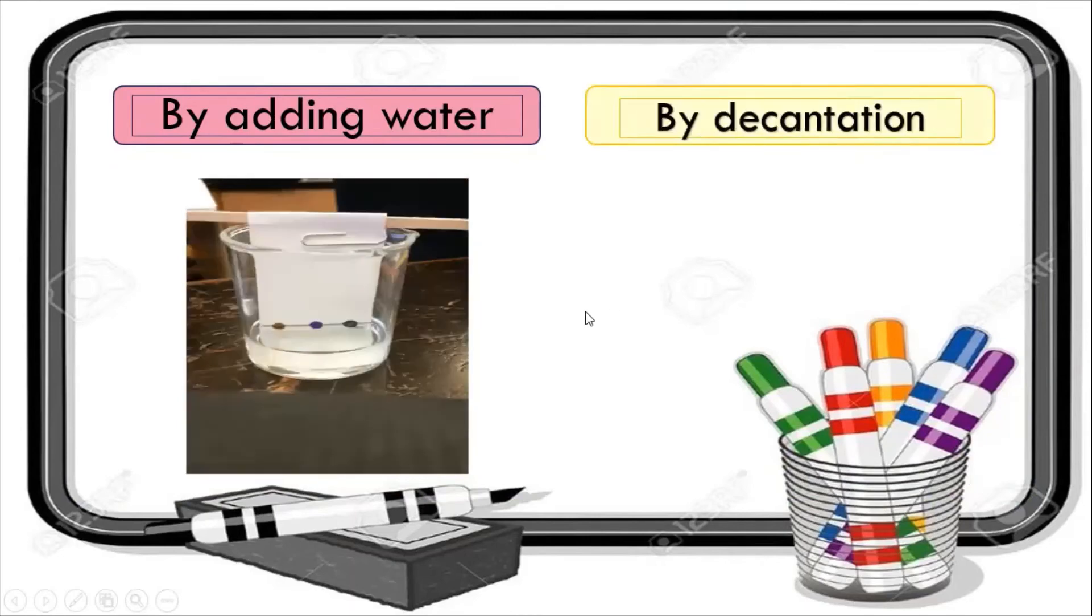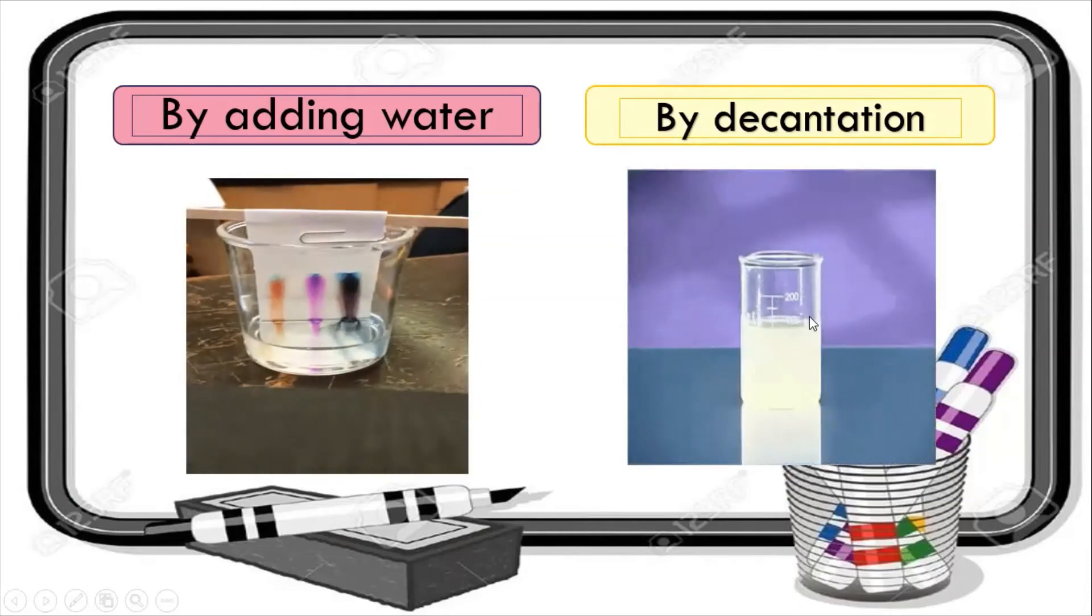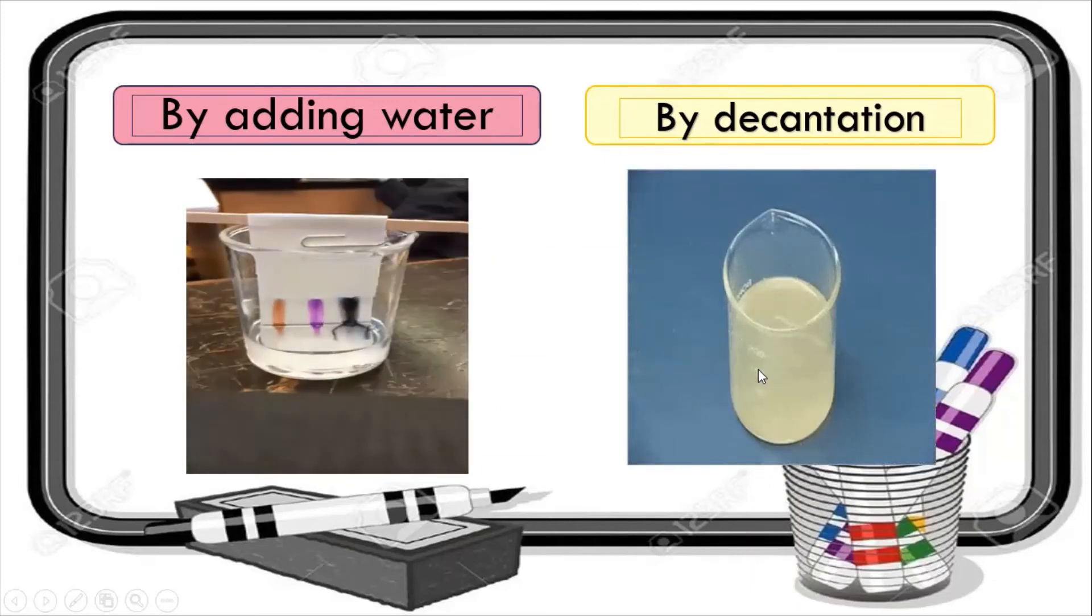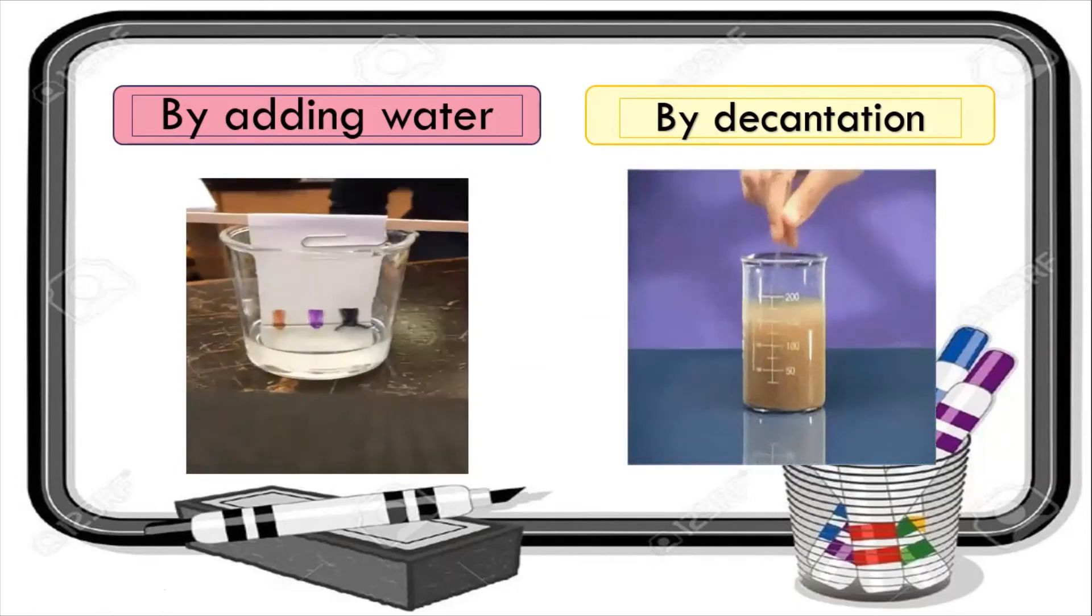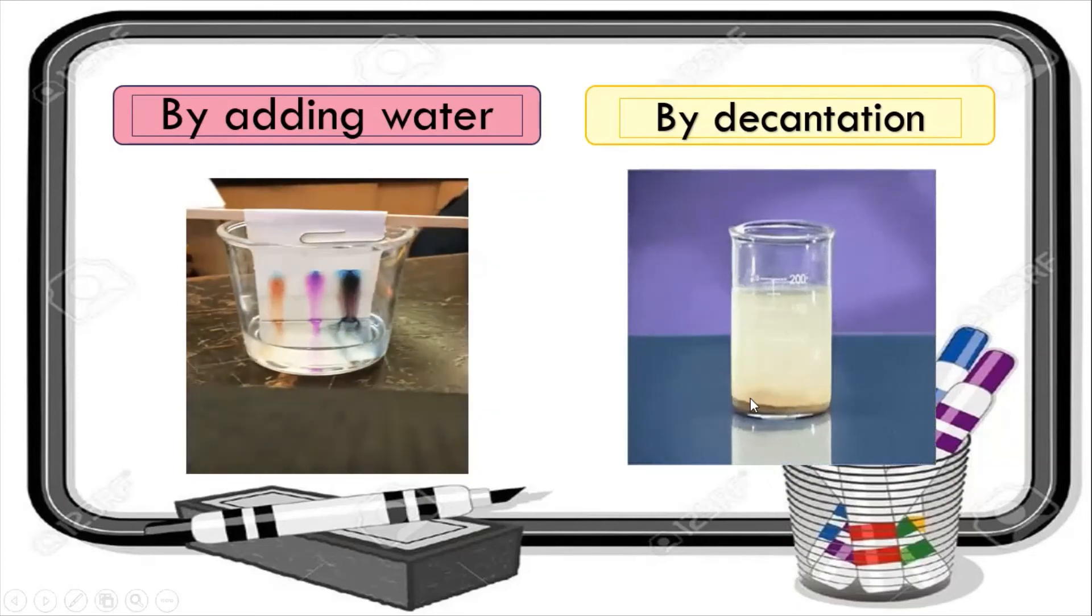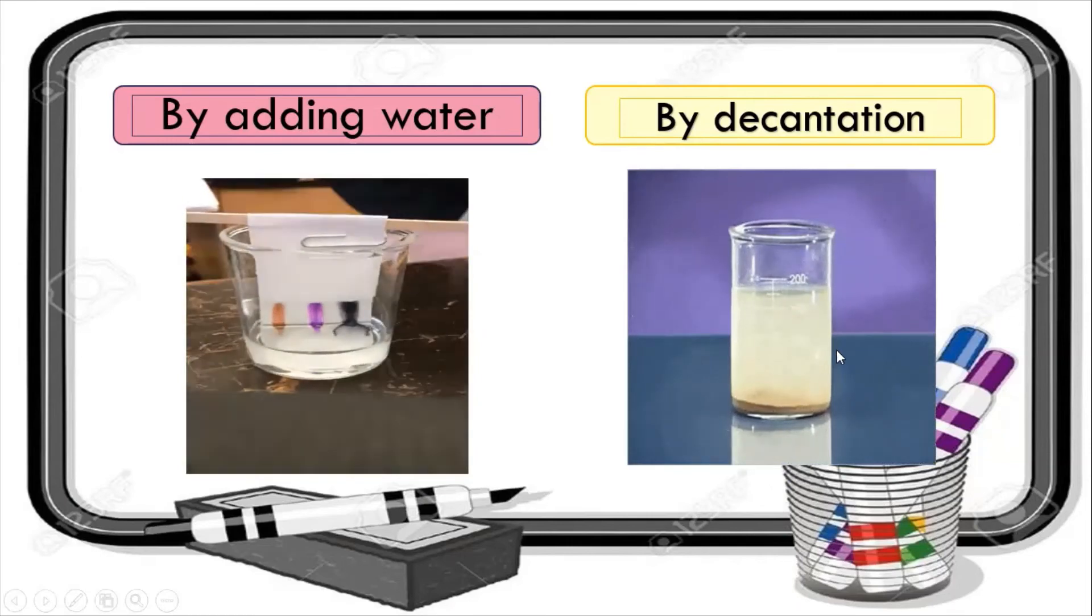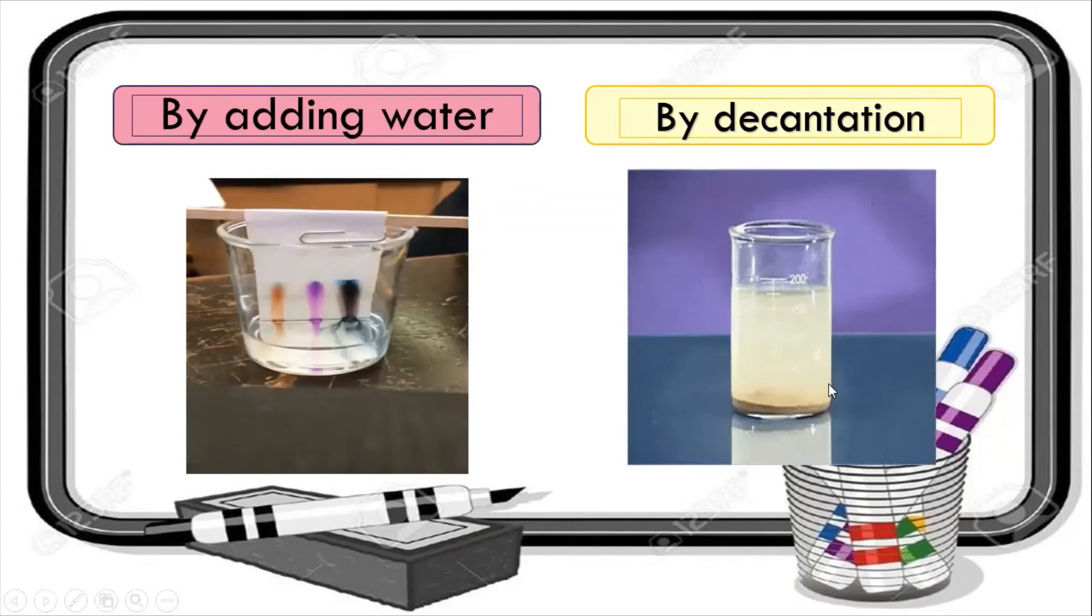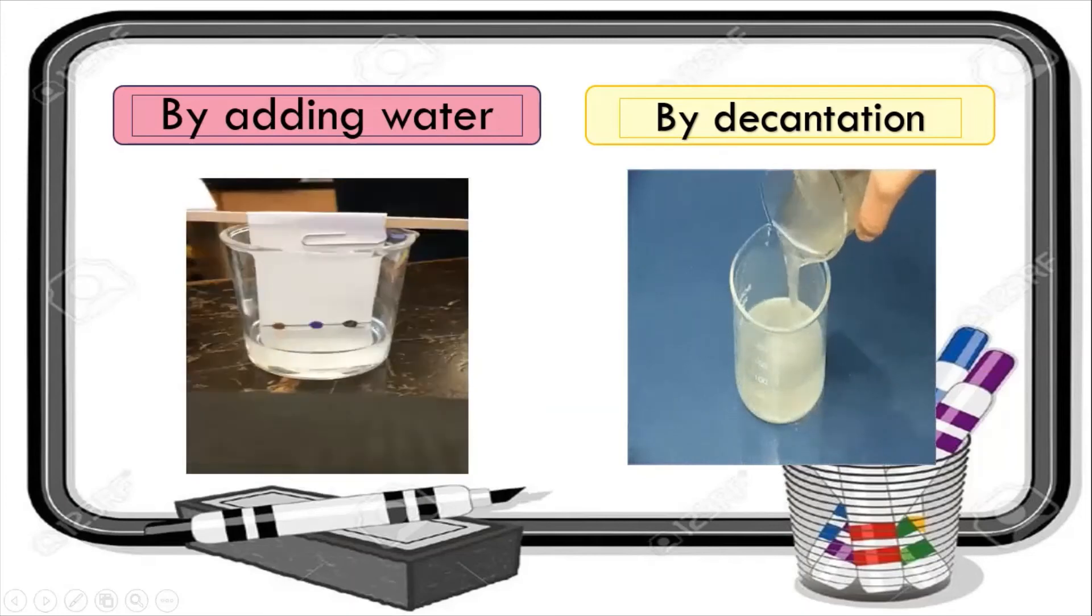By decantation students. An insoluble solid can be separated from a liquid by pouring off the clear liquid from the top of the mixture. This process is called decantation. The insoluble substance will remain at the bottom of the vessel. For example, it is a mixture of sand and water. After some time you see that the layer of the sand comes to the bottom and water will be on the top. That is a method called sedimentation. When water is separated by pouring off to a different container, that is the process called decantation.